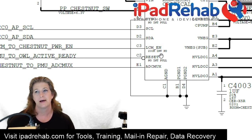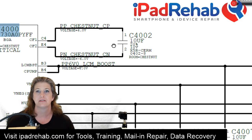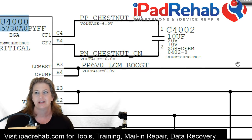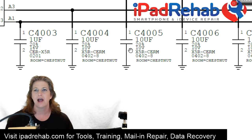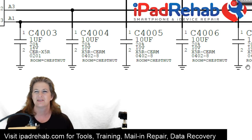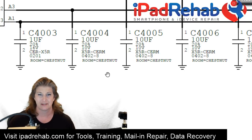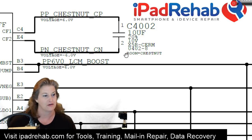That leaves this weirdo — C4002, a 10 microfarad capacitor. What do we know about capacitors in general? When we look across the schematic we see capacitors like these ones at the bottom where one foot is on ground — all of them have one side on ground and the other side on whatever line they're on. That's the traditional way capacitors work in all these iPhones — they are filtering capacitors there to clean up the signal. But this guy is different because this guy doesn't have a foot on ground.